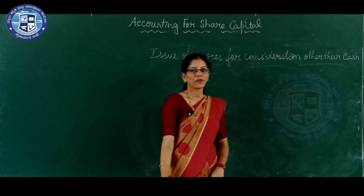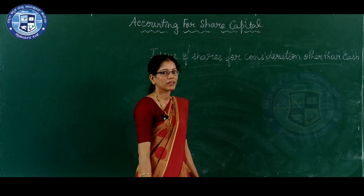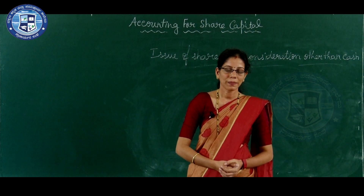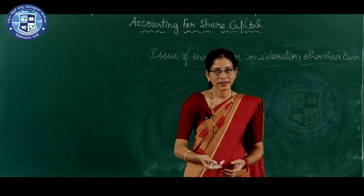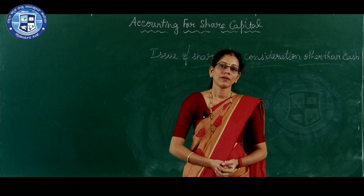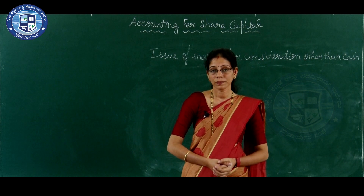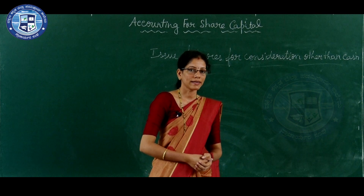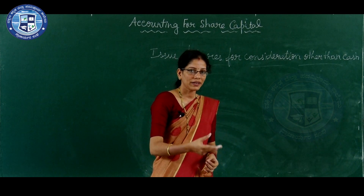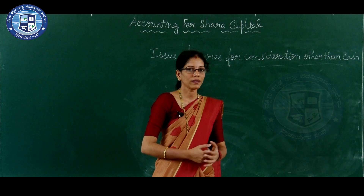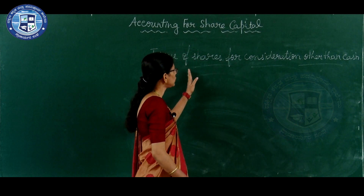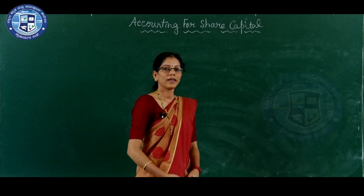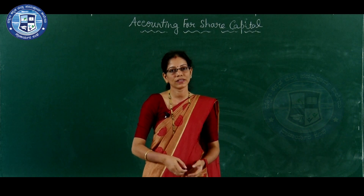Issue of shares for consideration other than cash means issue of shares by the company to the vendors - that is to the suppliers - when it purchases fixed assets like land, buildings, etc. Instead of paying cash, the company issues shares to the vendors. Then it is called as issue of shares for consideration other than cash. Now let us study how to pass journal entries in various situations.